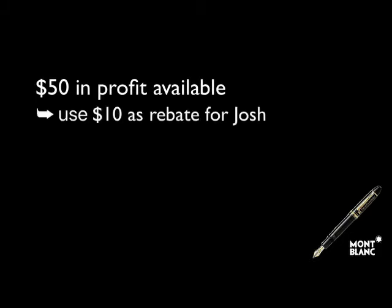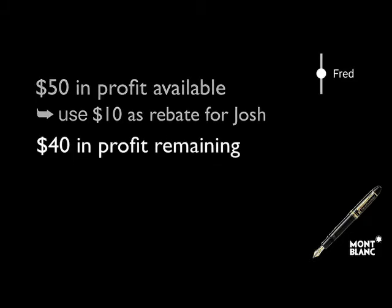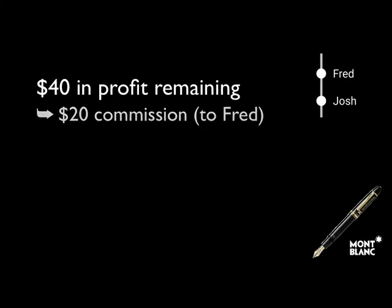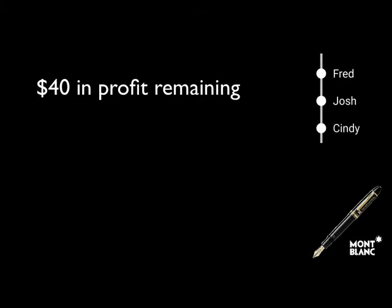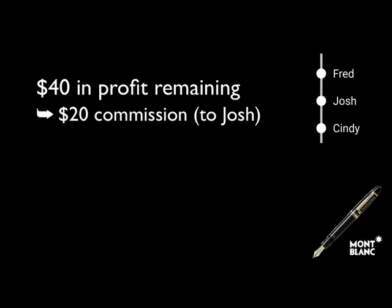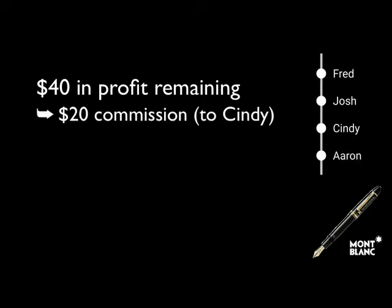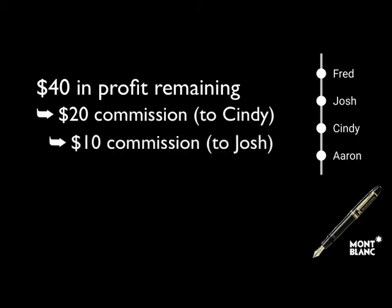Here's the compensation plan — I'll explain it in 30 seconds. MontBlanc agreed to a 50% discount, meaning $50 off a $100 pen. $10 went to Josh as a rebate, leaving $40. When Josh bought the pen, I get $20. When Cindy buys from Josh, he gets $20 like I did, but I get $10. When Cindy retweets it to Aaron, Cindy gets $20, Josh gets $10, and I get $5.